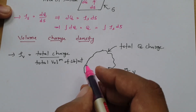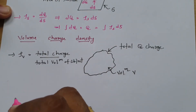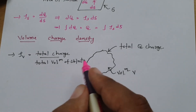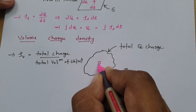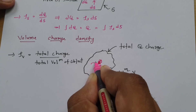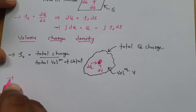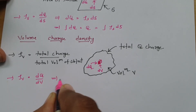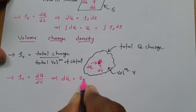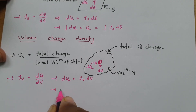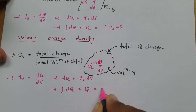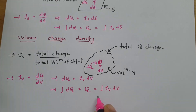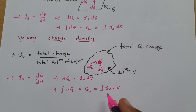Sometimes volume charge density is a function of coordinates. To calculate charge on a given volume, we consider a small differential volume dV. If dQ amount of charge exists in this small volume, then ρV = dQ/dV. Rewriting, dQ = ρV dV, and total charge Q is obtained by volume integration of volume charge density.